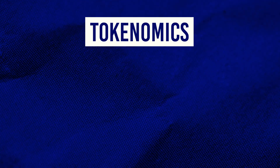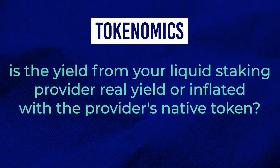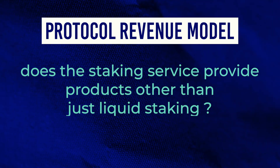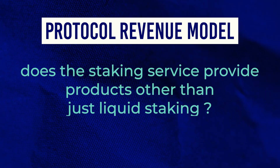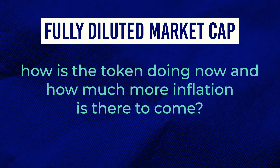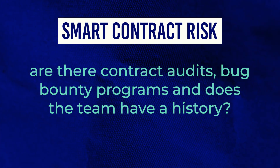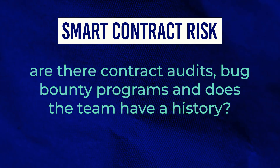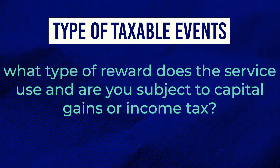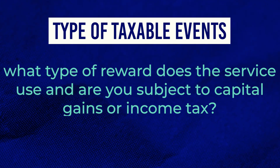AdBlue Collar Chain put together an excellent list of important factors to consider for liquid staking providers: Tokenomics — is the yield real yield in ETH or inflated with the provider's native token? Protocol Revenue Model — does the staking service offer products beyond just liquid staking? Current and fully diluted market cap — how much more inflation is to come? Smart Contract Risk — are there audits and bug bounty programs? DPEG Risk and treasury runway. Frequency and type of taxable events — are you subject to capital gains or income tax? Tokens useful beyond purely being liquid staking derivatives will probably do better in the long run.